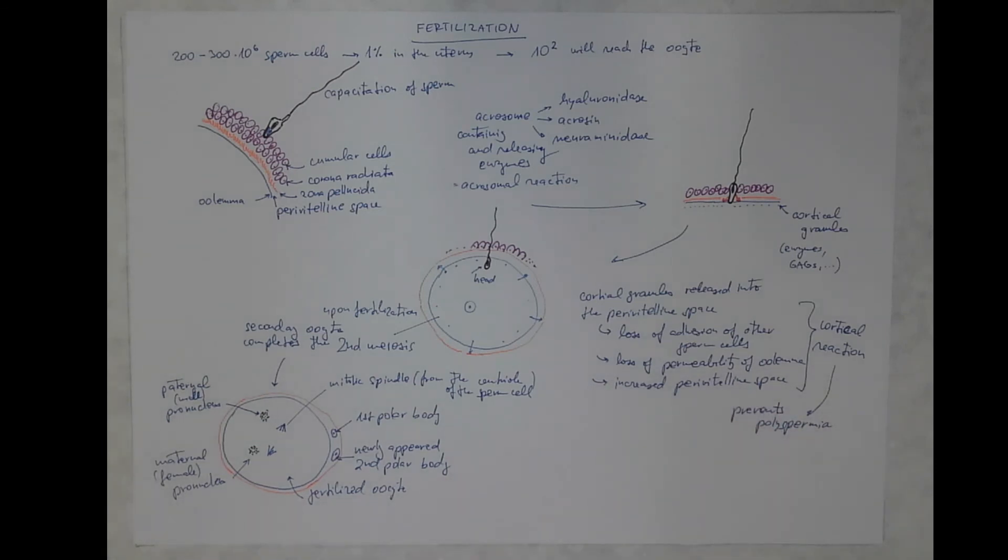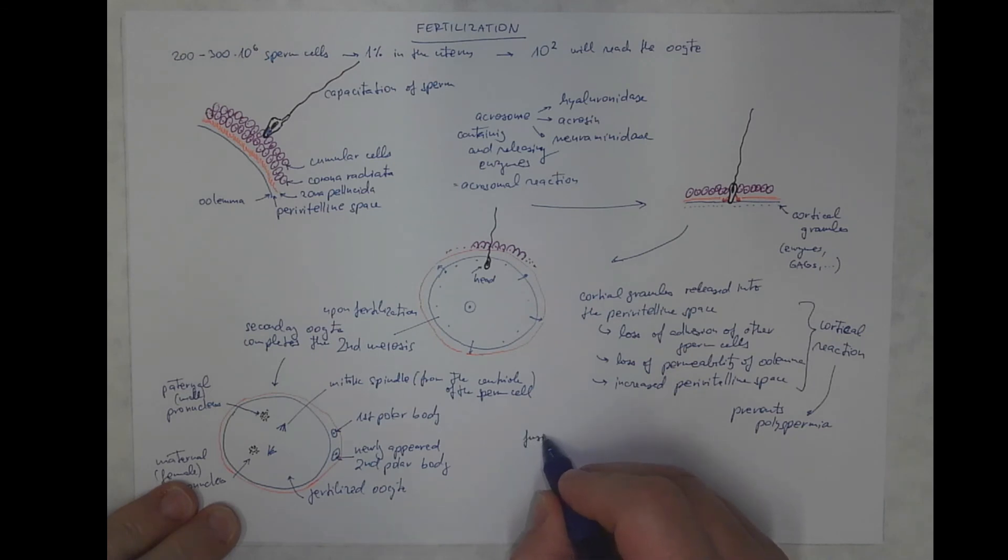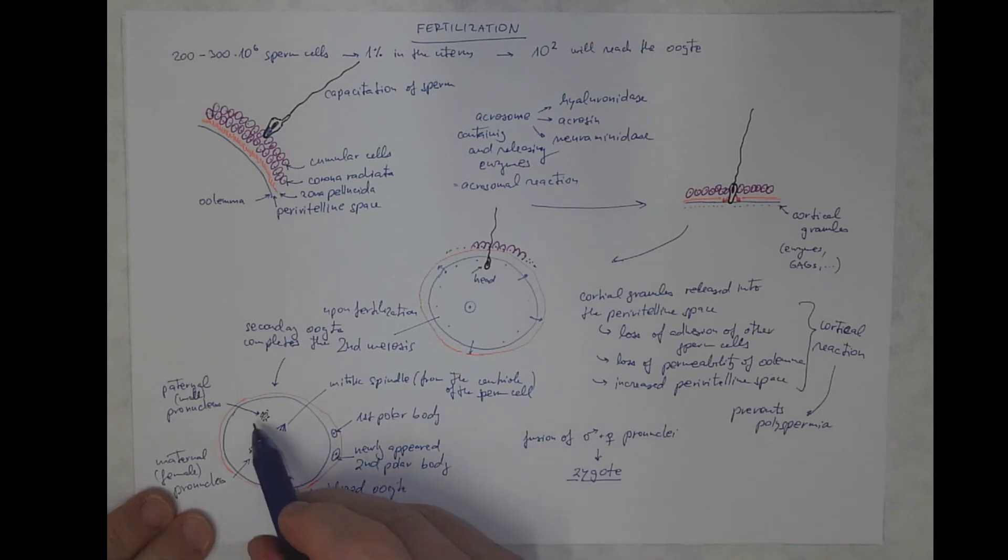So these two nuclei will fuse together, the male and female pronuclei will fuse, thus forming a cell with a single nucleus. And this fertilized oocyte with a complete nucleus is already called zygote. And the zygote has 46 chromosomes, because each pronucleus brought 23.